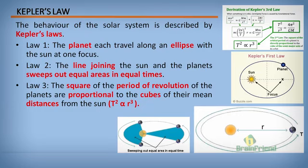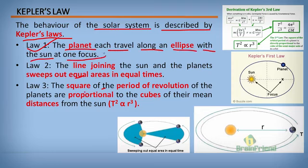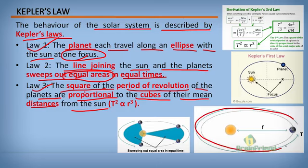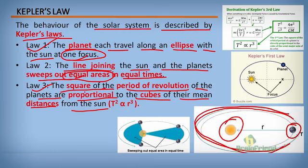Kepler's law describes the behavior of the solar system and is divided into three parts. Law 1: the planets each travel along an ellipse with the sun at one focus. Law 2: the line joining the sun and the planets sweeps out equal areas in equal times. Law 3: the square of the period of revolution of the planets is proportional to the cubes of their mean distance from the sun. Looking at Law 1 in the diagram — this is the planet and this is the sun — it travels along an ellipse with the sun at one focus.